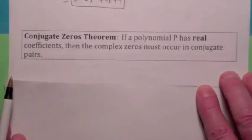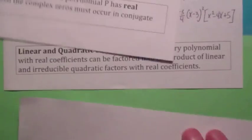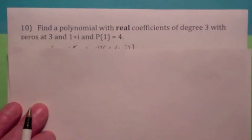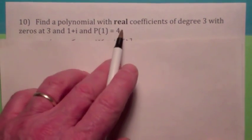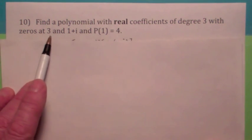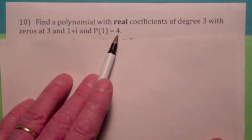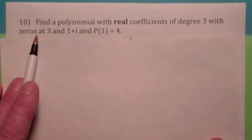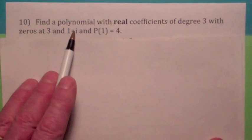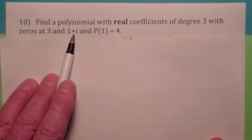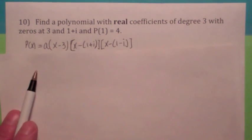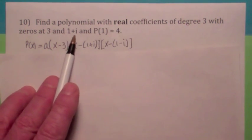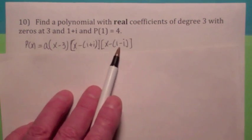If you have a polynomial p with real coefficients, if you have any complex zeros, they must occur in conjugate pairs. So let's suppose you want to find a polynomial with real coefficients of degree 3 that has zeros at 3 and 1 plus i, and p of 1 is 4. If it has degree 3, then you should be able to factor it into three linear factors. You only have two zeros given, but since it has real coefficients, you know that if 1 plus i is a zero, then 1 minus i must also be a zero — the conjugate must also be a zero.